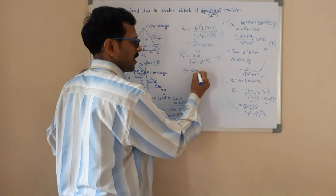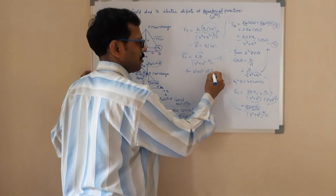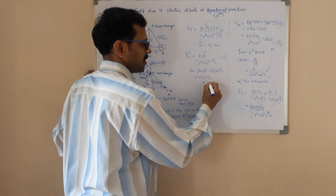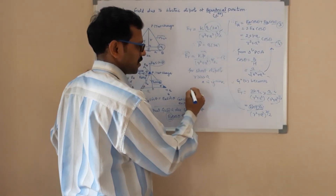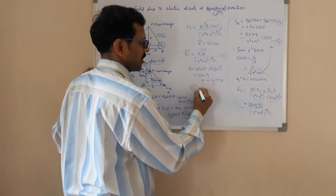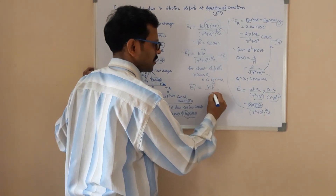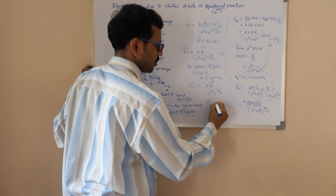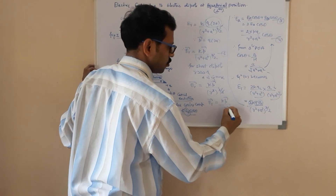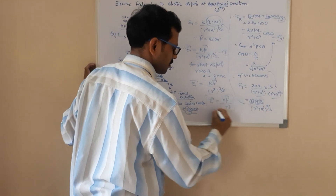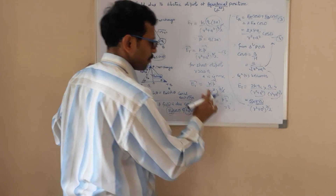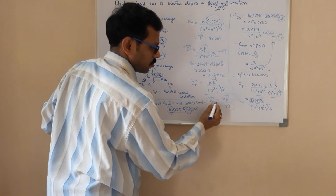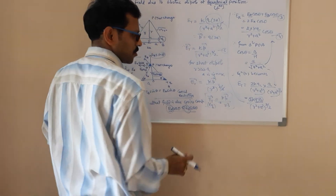For a short dipole, as this question always comes from short dipole, when R is much greater than A, A is ignored. When A is ignored, E total can be written as KP upon R squared to the power 3 upon 2. The power 2 and half cancel, so E total equals KP upon R cubed. This is the resultant field for the equatorial position. It is inversely proportional to R cubed.